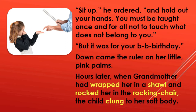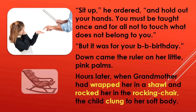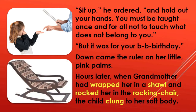Hours later, when grandmother had wrapped her in a shawl and rocked her in the rocking chair, the child clung to her soft body. After an hour or two, Kizia's grandmother came and wrapped her — covered her — in a shawl, a piece of fabric worn in winter. Rocked means moved backward and forward to make a baby sleep. The grandmother was rocking her in the rocking chair, which also moves back and forth. The child clung — attached herself — to her soft body.